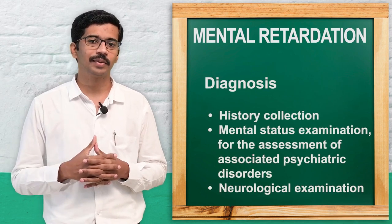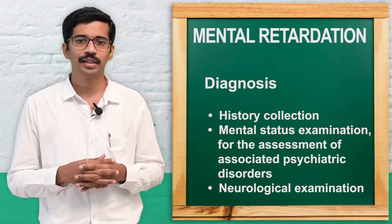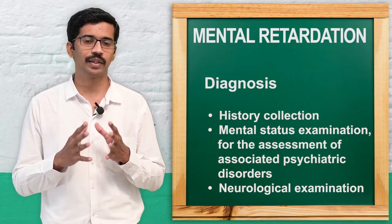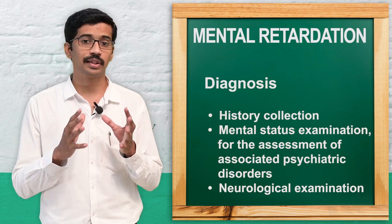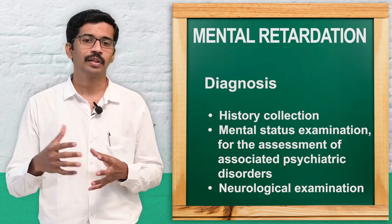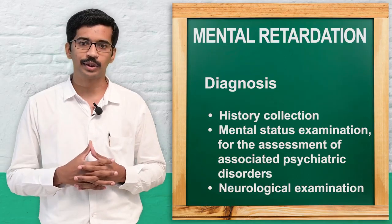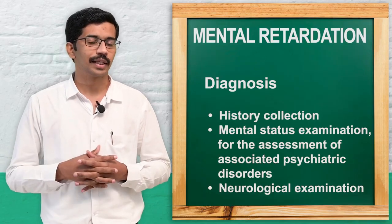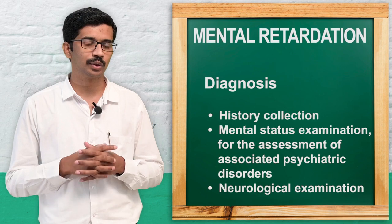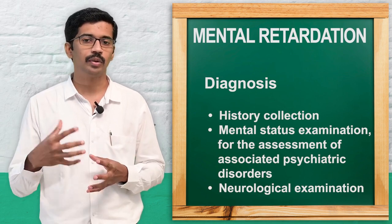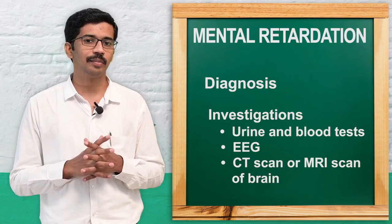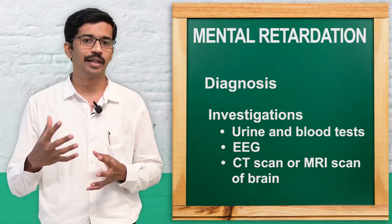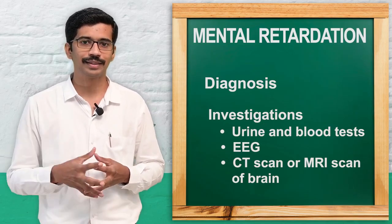Now the diagnostic evaluation — how we diagnose mental retardation. The important thing is history collection, especially the perinatal history from the mother. Then we go for mental status examination to identify any associated psychiatric problems. Neurological examination is also done. Since there may be errors of metabolism, urinary examination and blood investigation are performed. Electroencephalography — EEG — is also used.